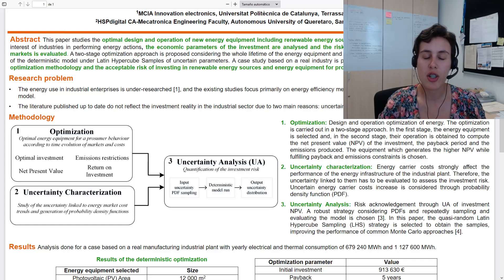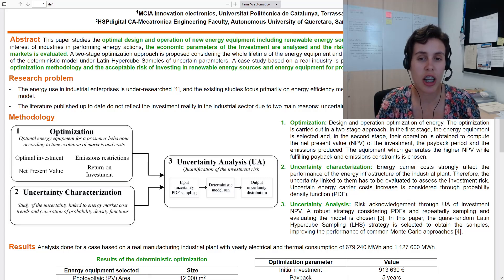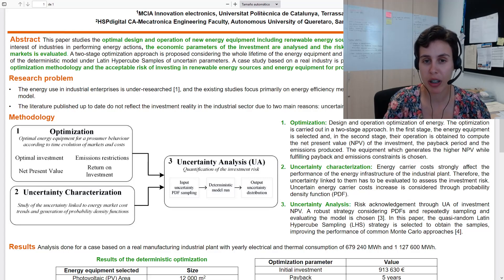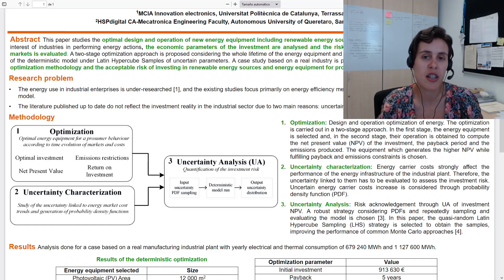The operational optimization is repeated for each of the samples, obtaining the probability density function of the net present value of the investment. This function enables to compute the expected variability of the outcome and the risk that the enterprise is facing when performing the energy investment.